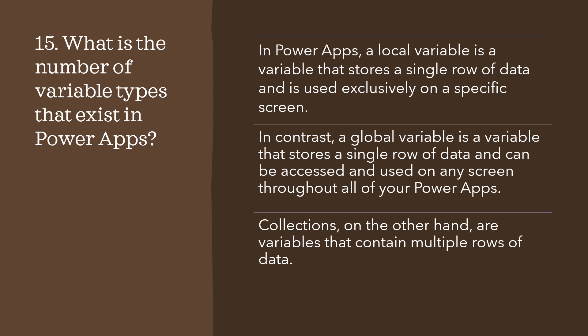Question number 15: what types of variables exist in Power Apps? In Power Apps, we have two types of variables: local variables and global variables, plus collections. A local variable stores a single row of data and is used exclusively on a specific screen. A global variable stores a single row of data and can be accessed and used on any screen throughout all of your Power Apps. Collections, on the other hand, are variables that contain multiple rows of data.